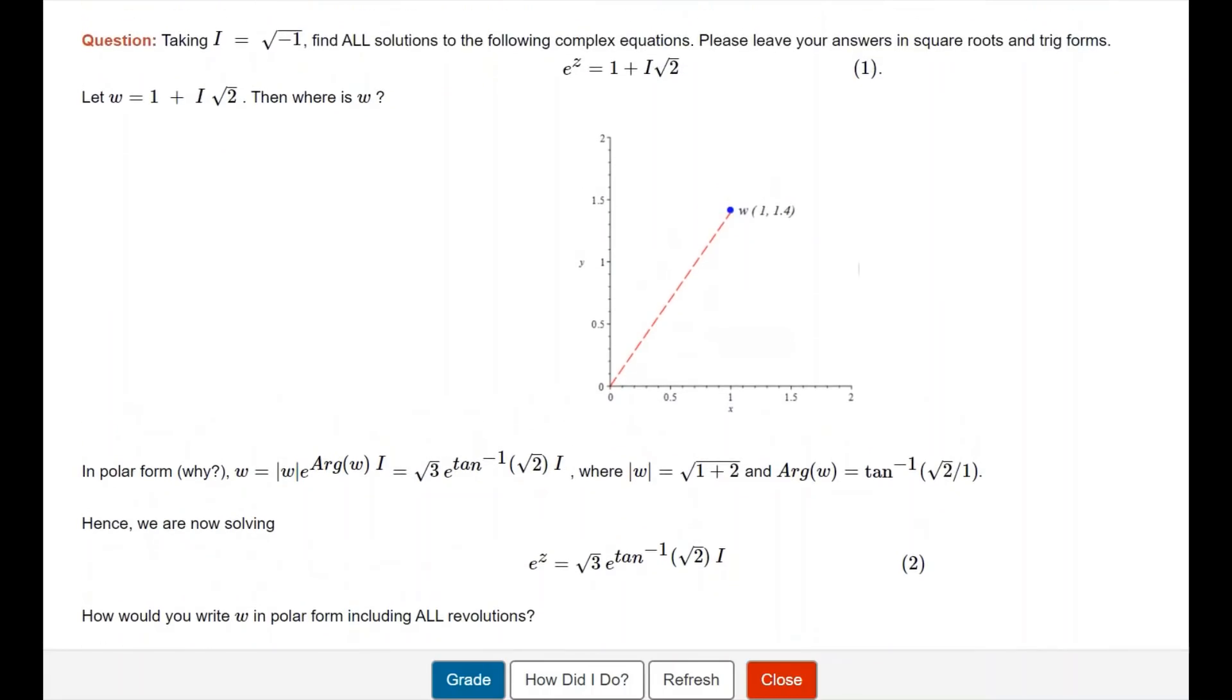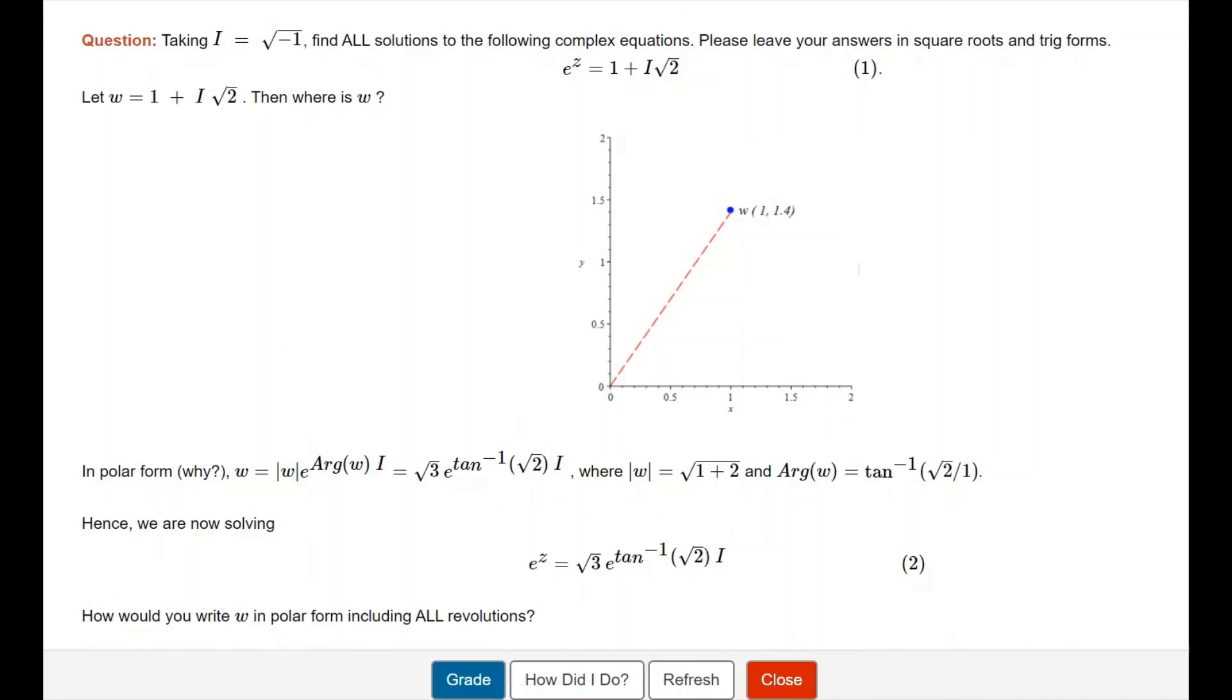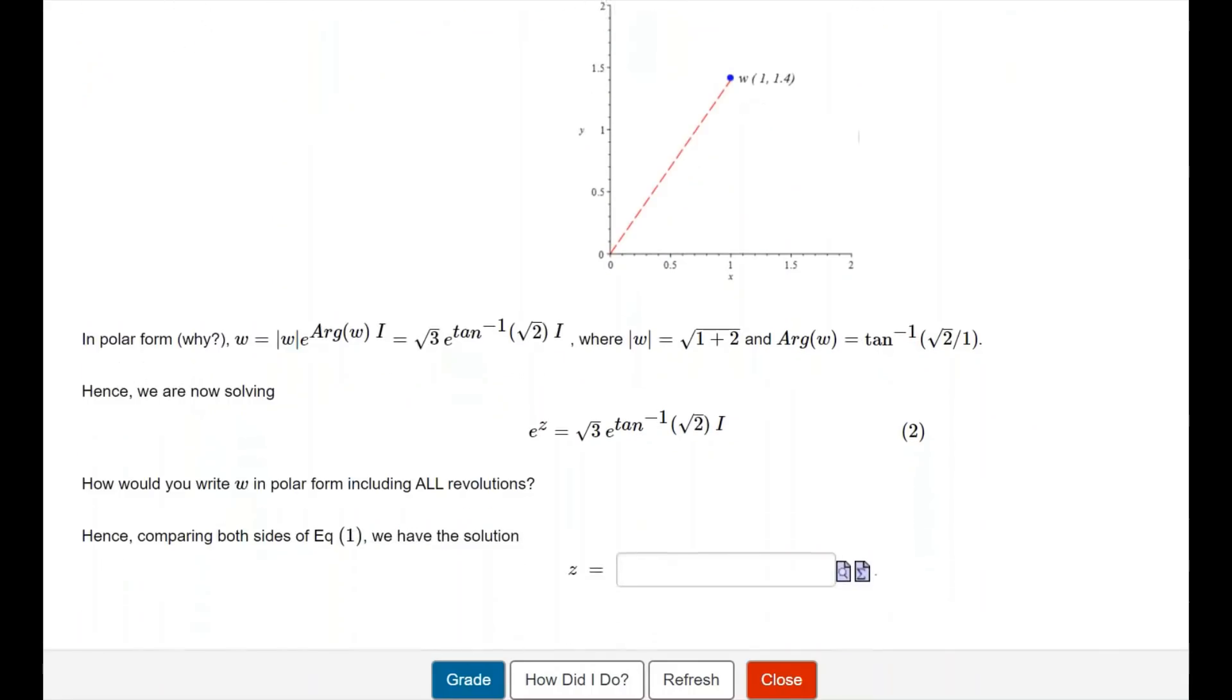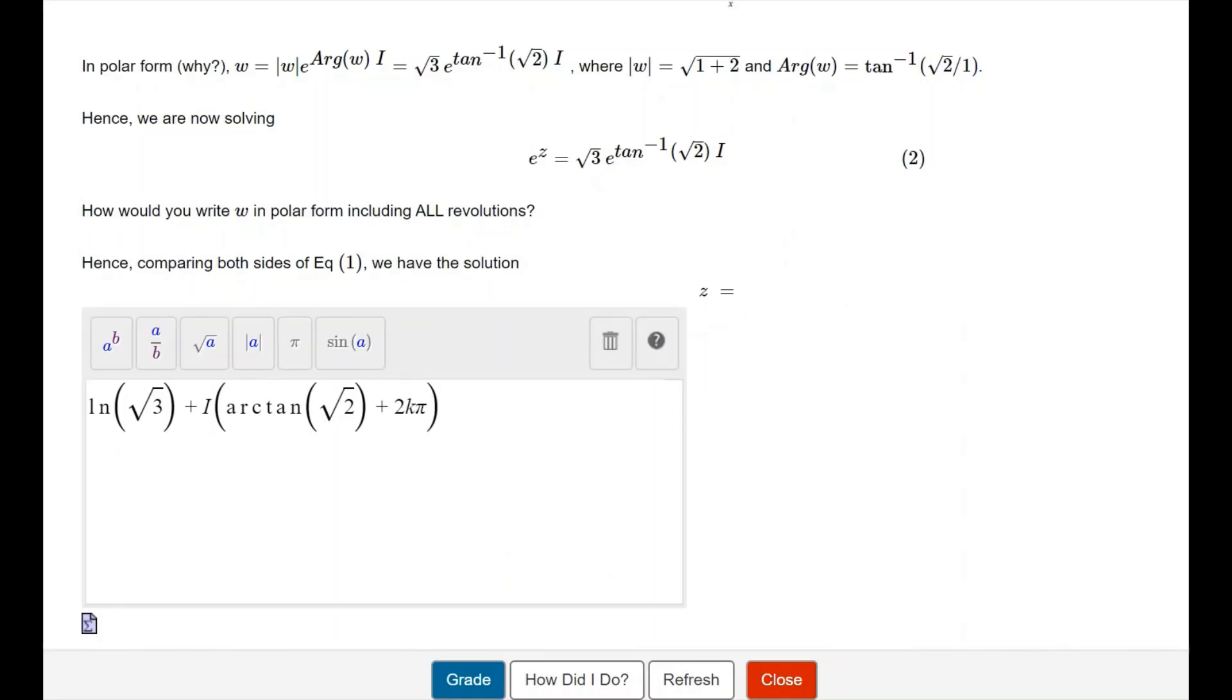So we come down to solving equation 2 instead of equation 1, because equation 2 has both sides in polar form. It's easier for us to solve it. All we have to do is take the log of both sides, so we can write z in expanded form: z = ln(√3) + i·arctan(√2), which is the basic structure.